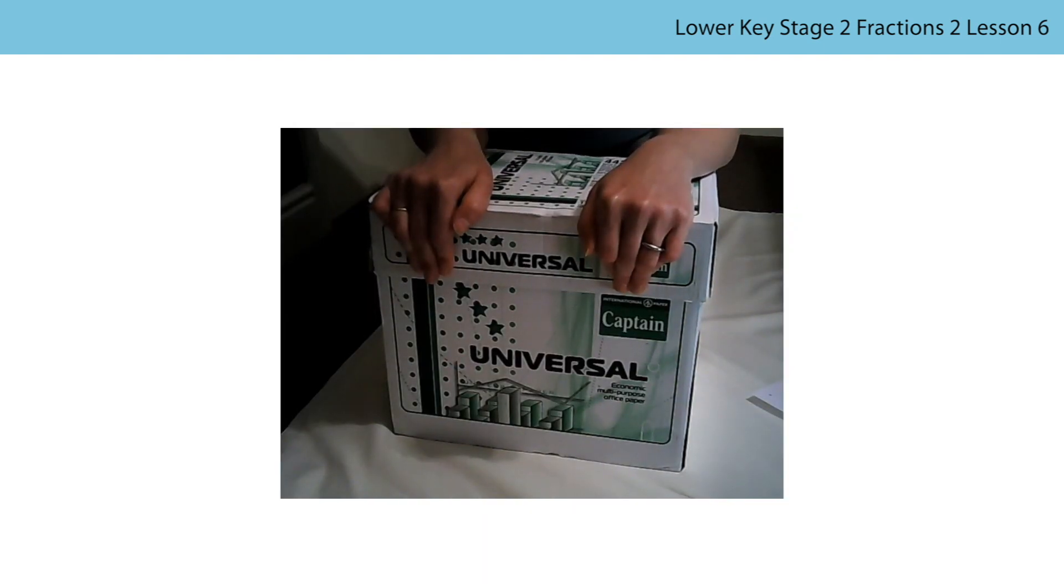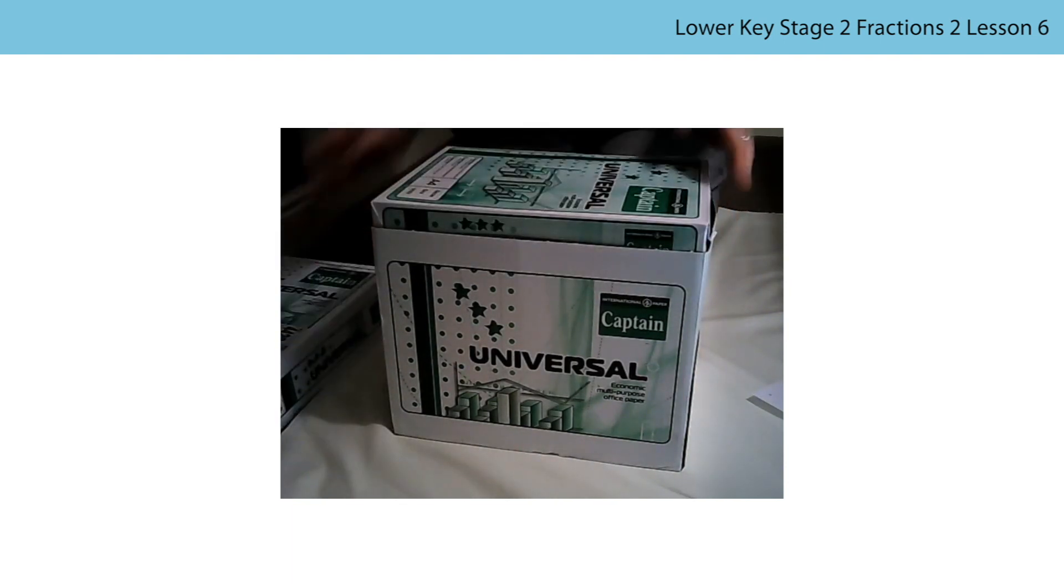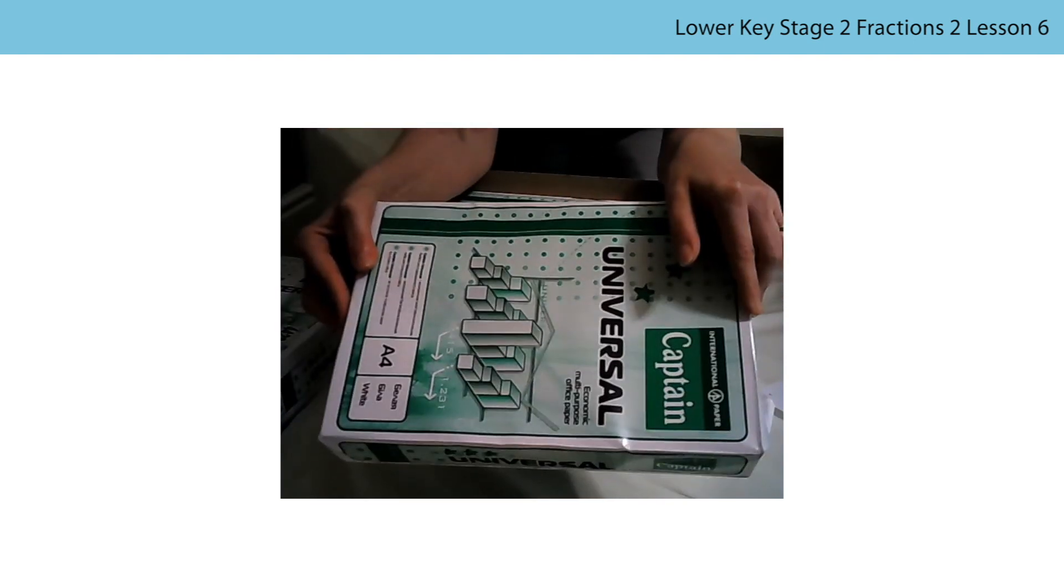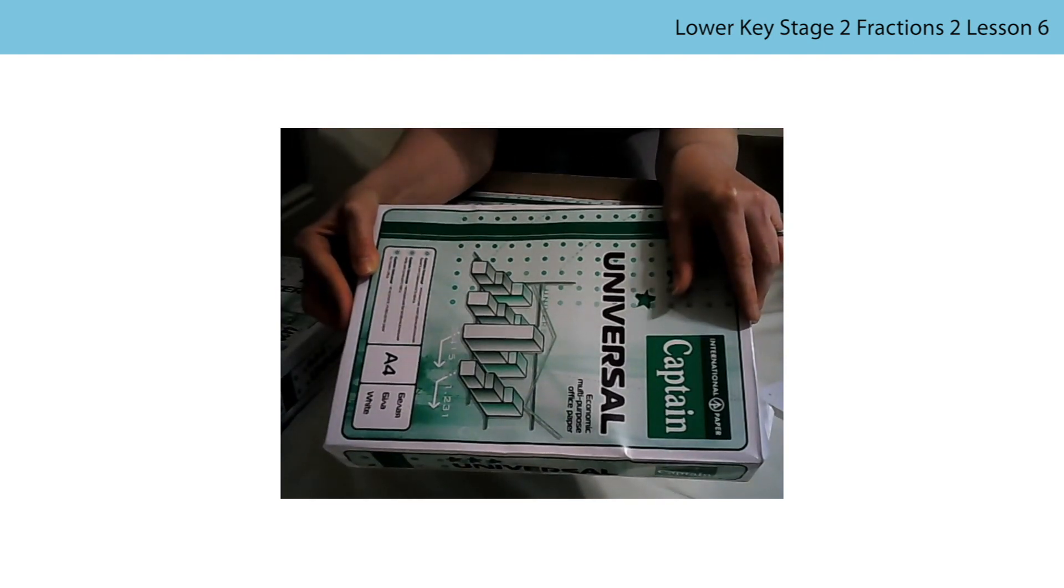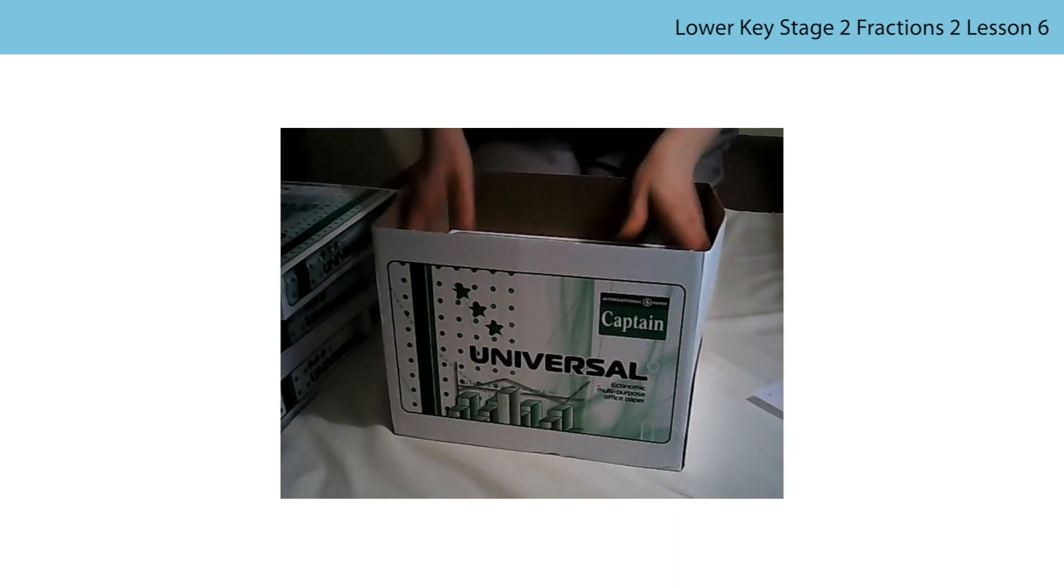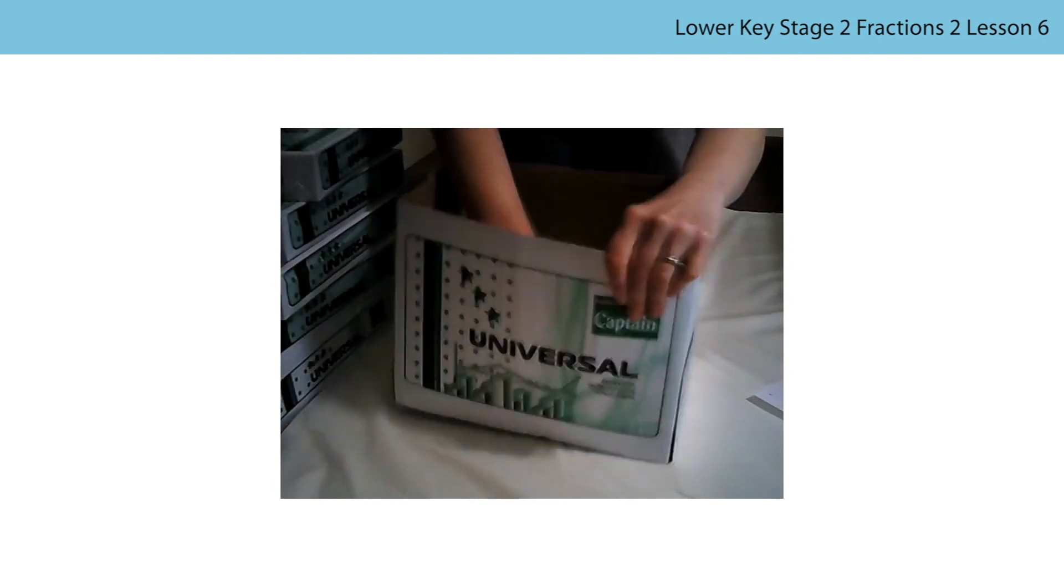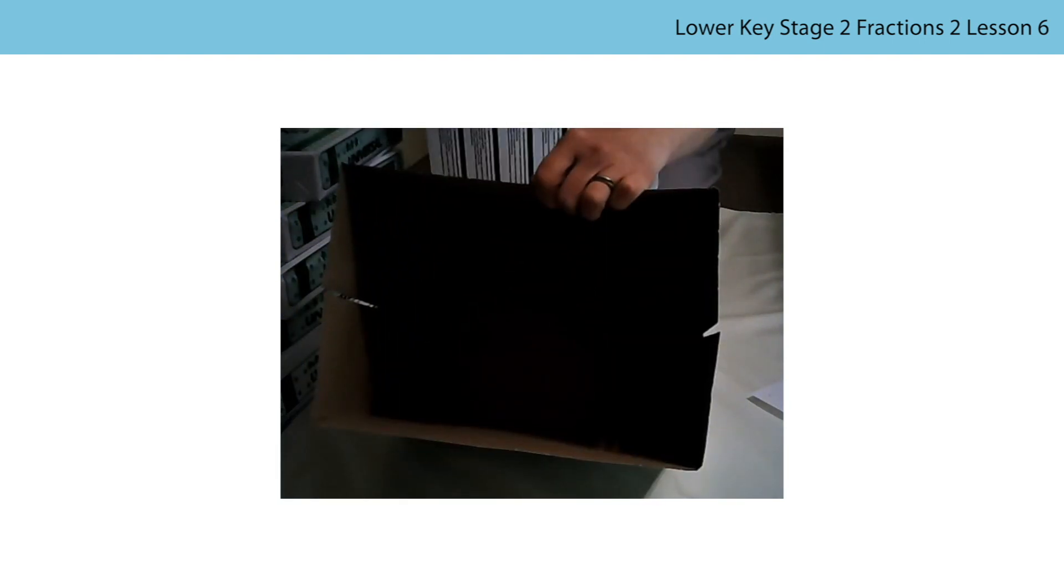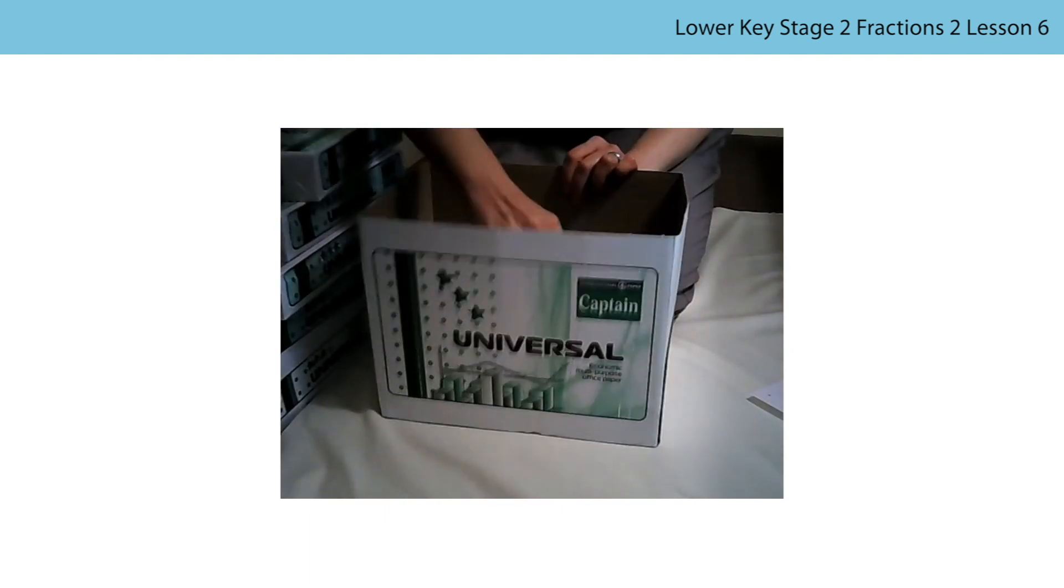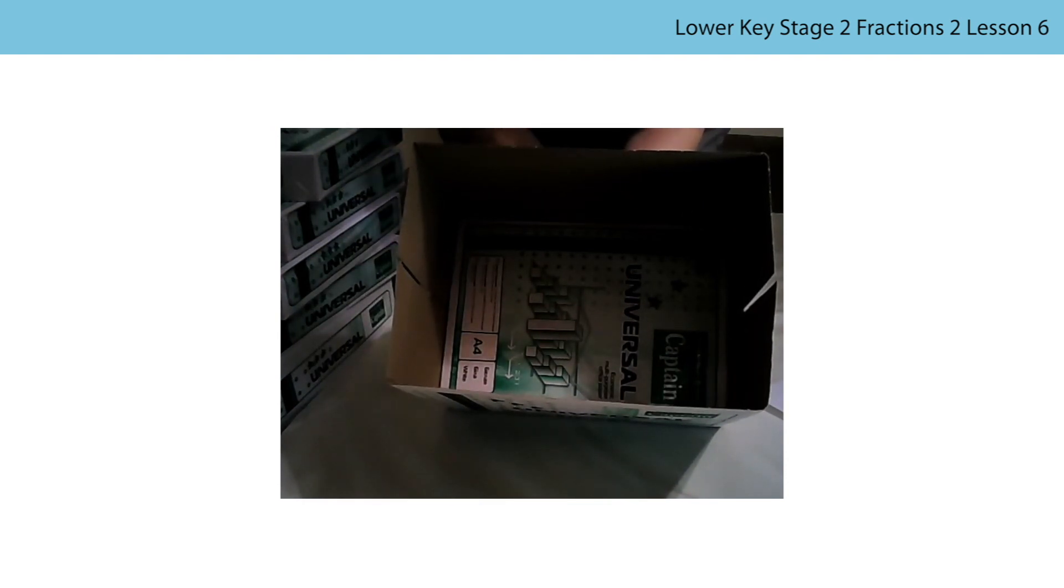Let's have a look at another example. I have a box that is filled with packs of paper. If the whole box is filled, then it will hold five packs of paper. Each pack, therefore, represents one-fifth of the whole box. If I remove all of the paper and put back in only one pack, then we can say that one-fifth of the whole is filled.